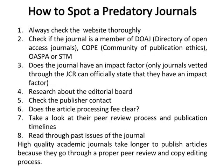How to spot a predatory journal: check the website thoroughly; verify whether the journal is a member of DOAJ, COPE, OASPA, or STM; check if the journal has a legitimate impact factor through the JCR; research the editorial board; check the publisher; confirm whether the article processing fee is clear; review the peer review process and publication timelines; and read through past issues. High-quality academic journals take longer to publish because they go through proper peer review and copy editing.